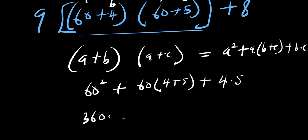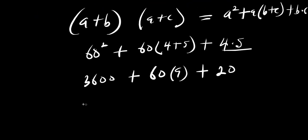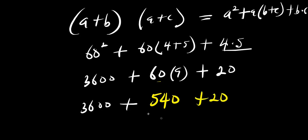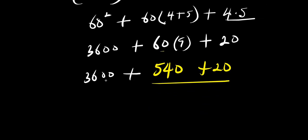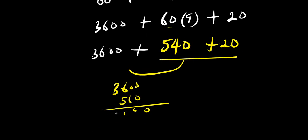Computing: 60^2 is 3600, plus 60 times 9 which is 540, plus 4 times 5 which is 20. So 540 plus 20 is 560, and 3600 plus 560 gives us 4160. So 64 times 65 equals 4160.